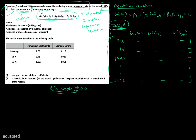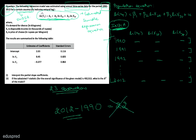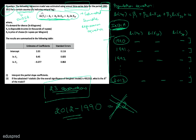Note that to find the number of observations, do not do 2012 minus 1990, which gives 22 — that is not the right answer. We have to include both 1990 and 2012, so the number of observations is 23, not 22. Be careful with this, because if you calculate the number of observations wrong, many things will end up getting wrong.